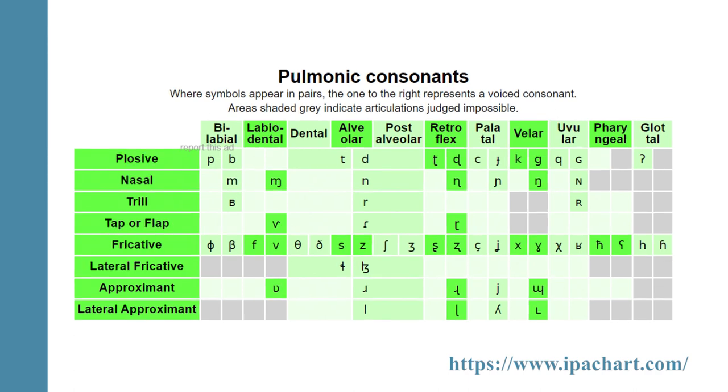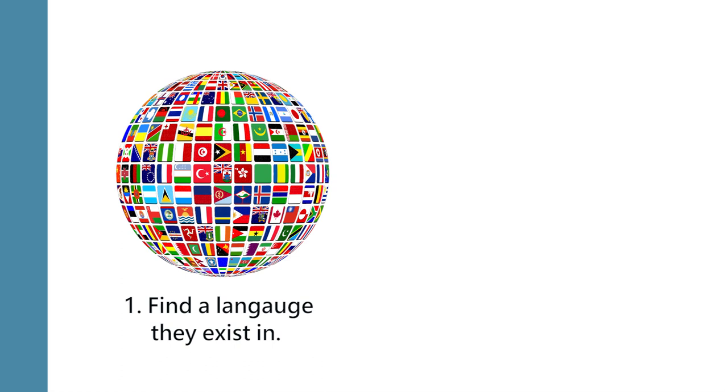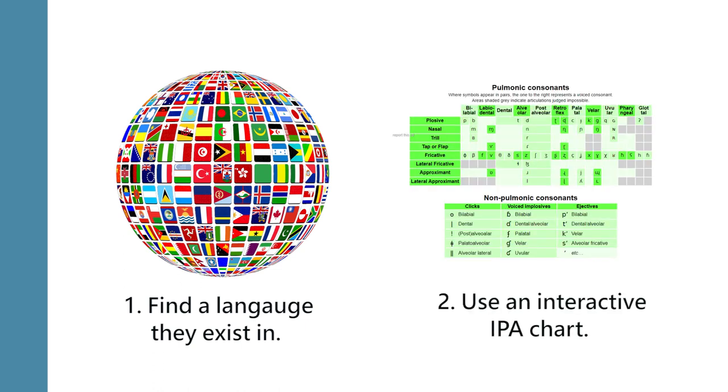There are two ways to learn to pronounce them. Either you have to find a language that has these two as phonemes and then find words in that language that contain those sounds, or you can go to the IPA chart and play the sounds like I did right now. But there is a more complicated way of learning how to pronounce them.